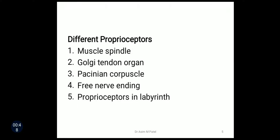There are five different types of proprioceptors. First one is muscle spindle, Golgi tendon organ, Pacinian corpuscle, free nerve ending, and proprioceptors in labyrinth. Among these five we are discussing only about the first four. The fifth one, proprioceptors in labyrinth, will be discussed in vestibular apparatus.